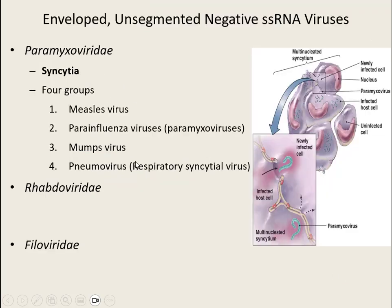The Paramyxoviridae group is larger. All four groups of viruses in this family share one characteristic: they make a syncytia, meaning infected cells fuse together. As viruses get inside these cells, the cells fuse, allowing viruses to travel freely from one fused cell to another — forming one massive cell that's a great breeding ground for making new viruses. The four viruses we'll discuss are measles, parainfluenza, mumps, and pneumovirus, more commonly known as respiratory syncytial virus.